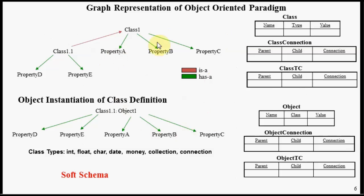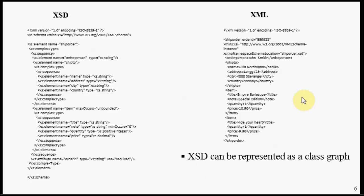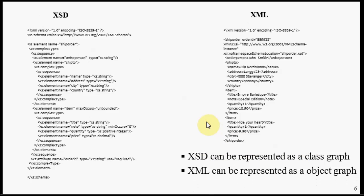This whole paradigm — described with these six relational database tables — is known as a soft schema. Looking at an XML Schema Definition (XSD) document and the corresponding XML document, you'll notice that an XSD document is a hierarchy, and similarly an XML document is also a hierarchy. Therefore, an XSD document can be represented as a class graph, and an XML document can be represented as an object graph.